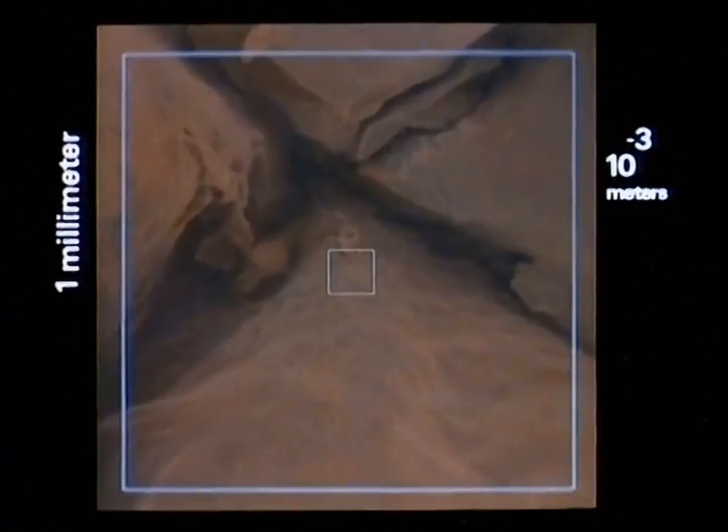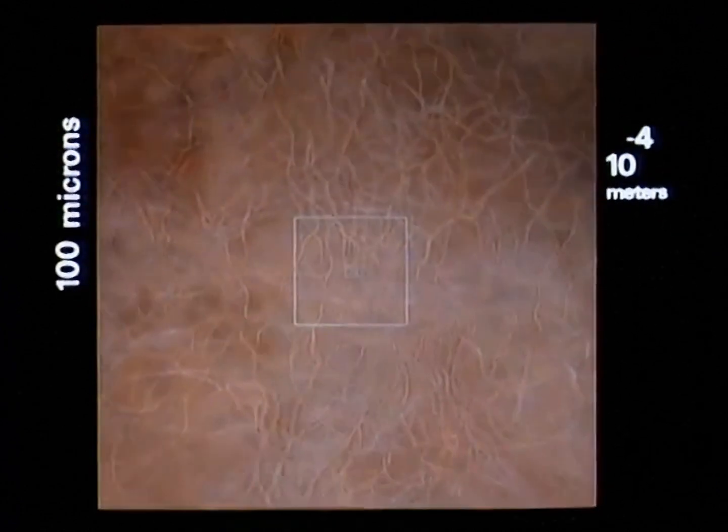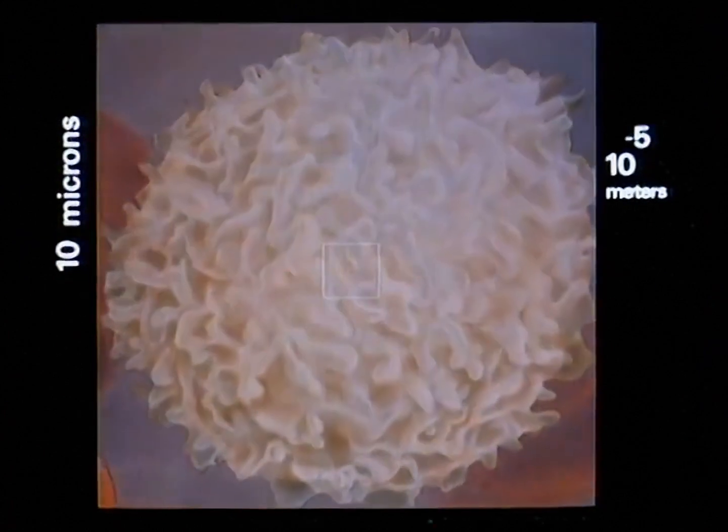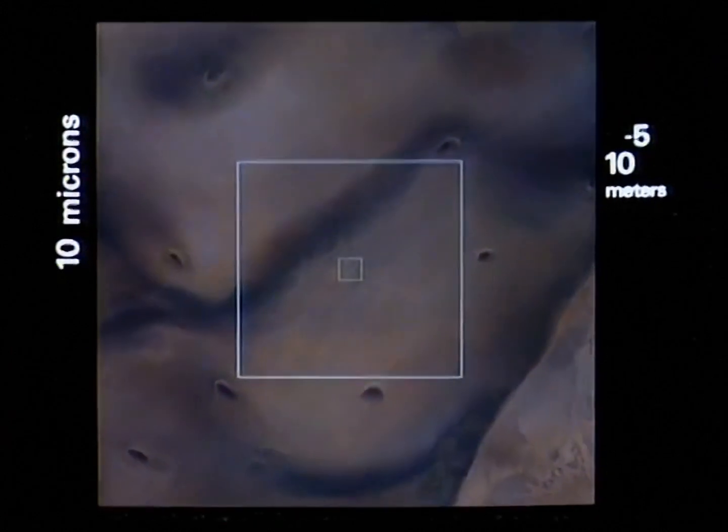Skin layers vanish in turn. An outer layer of cells, felty collagen. The capillary containing red blood cells and a lymphocyte. We enter the white cell. Among its vital organelles, the porous wall of the cell nucleus appears.